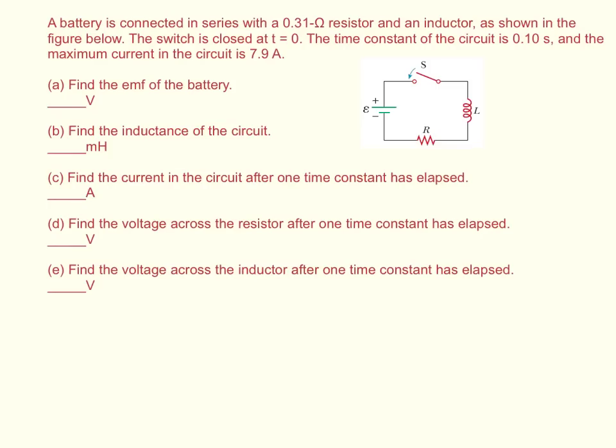A battery is connected in series with a 0.31 ohm resistor and an inductor as shown in the figure below. The switch is closed at time equal to zero. The time constant of the circuit is 0.1 seconds and the maximum current in the circuit is 7.9 amps.